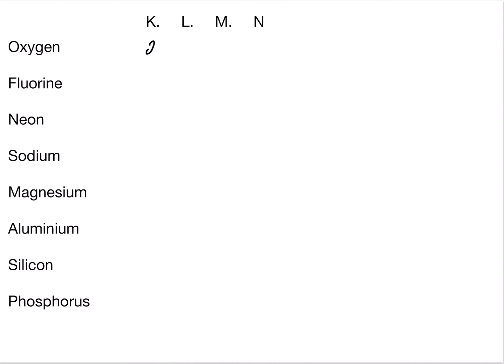Oxygen has an atomic number of 8, so 2 electrons in the first K shell and 6 electrons in the second L shell. Fluorine has an atomic number of 9, so 2 and 7 — that is 7 in the second L shell. Neon, an inert gas, has an atomic number of 10, so 2 in the K shell and 8 in the L shell. It has 8 electrons, giving it a stable electronic configuration.